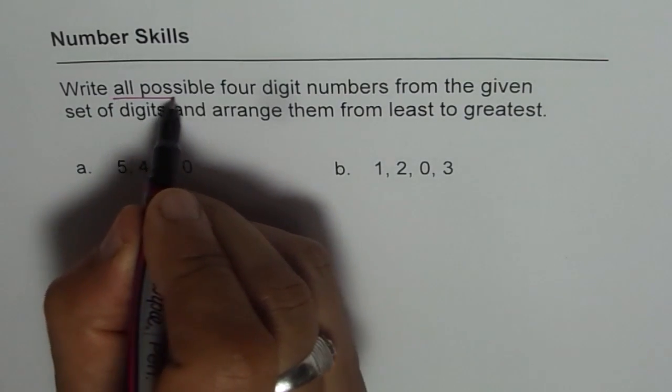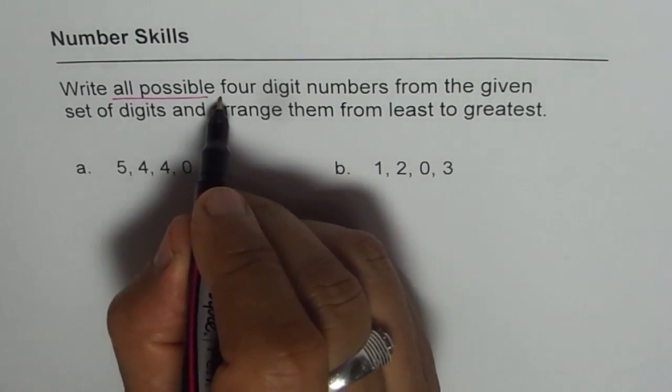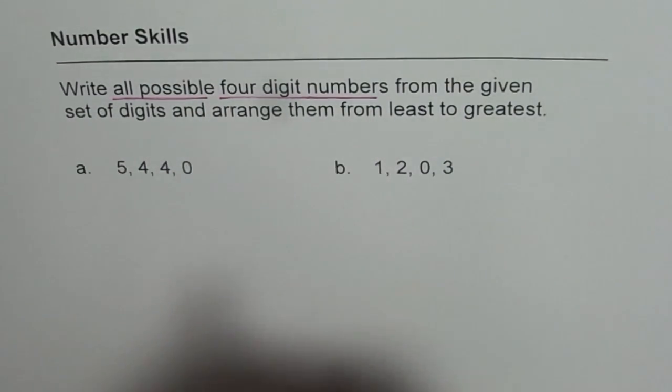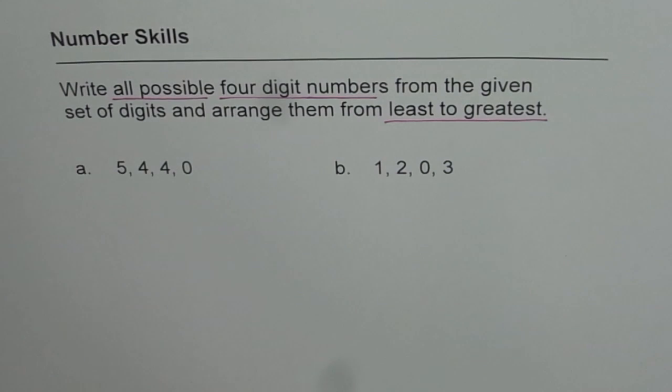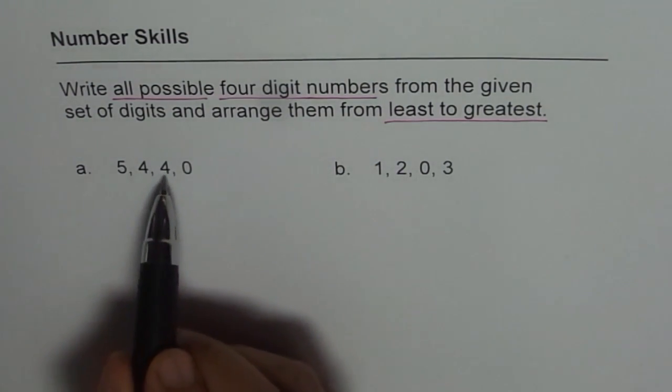All possible. Do you see? Don't miss any. Then four digit numbers and then you have to arrange them from least to greatest. Correct? So these are three things which you have to do from the set of digits given to you. So let's begin with the first one which is 5440.